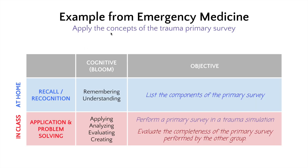Let me give you an example. Let's say in my initial lecture I had the objective: apply the concepts of the trauma primary survey. If I break this up into a lower-order and a higher-order objective, for the lower-order video objective I want them to be able to list the components of the primary survey in the trauma victim — that's a recall question. For application and problem-solving, I want them to perform a primary survey in a trauma simulation and evaluate the completeness of the primary survey performed by another group of students — those are higher-order objectives.